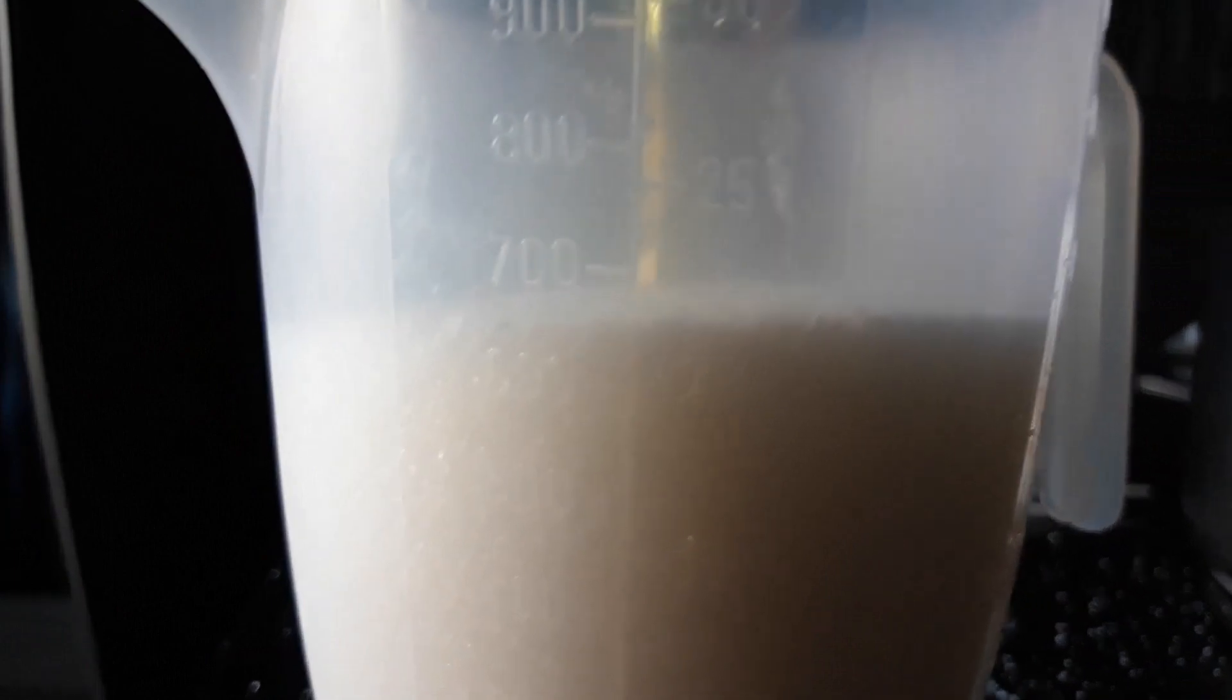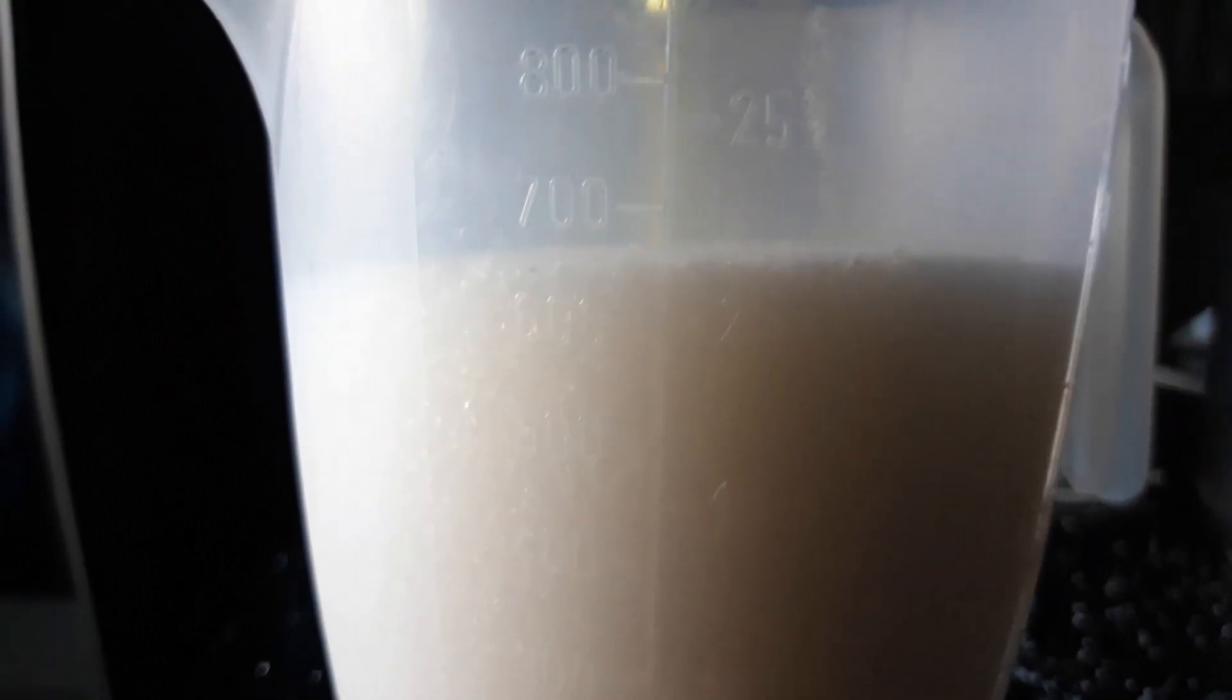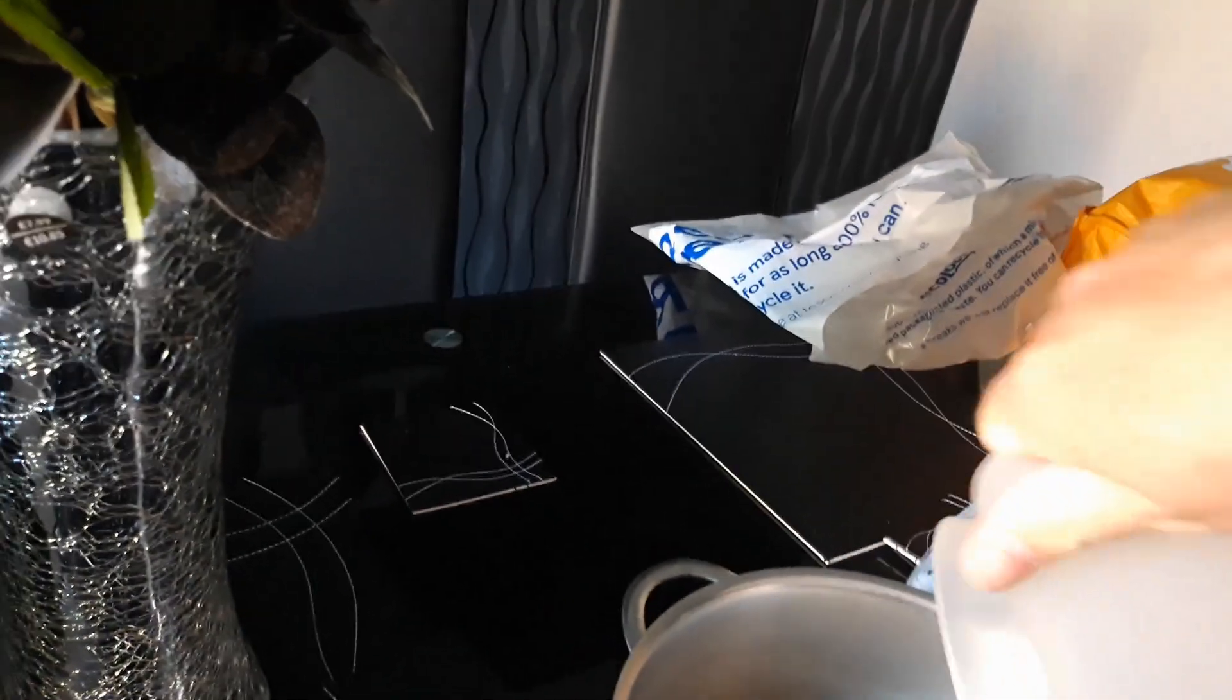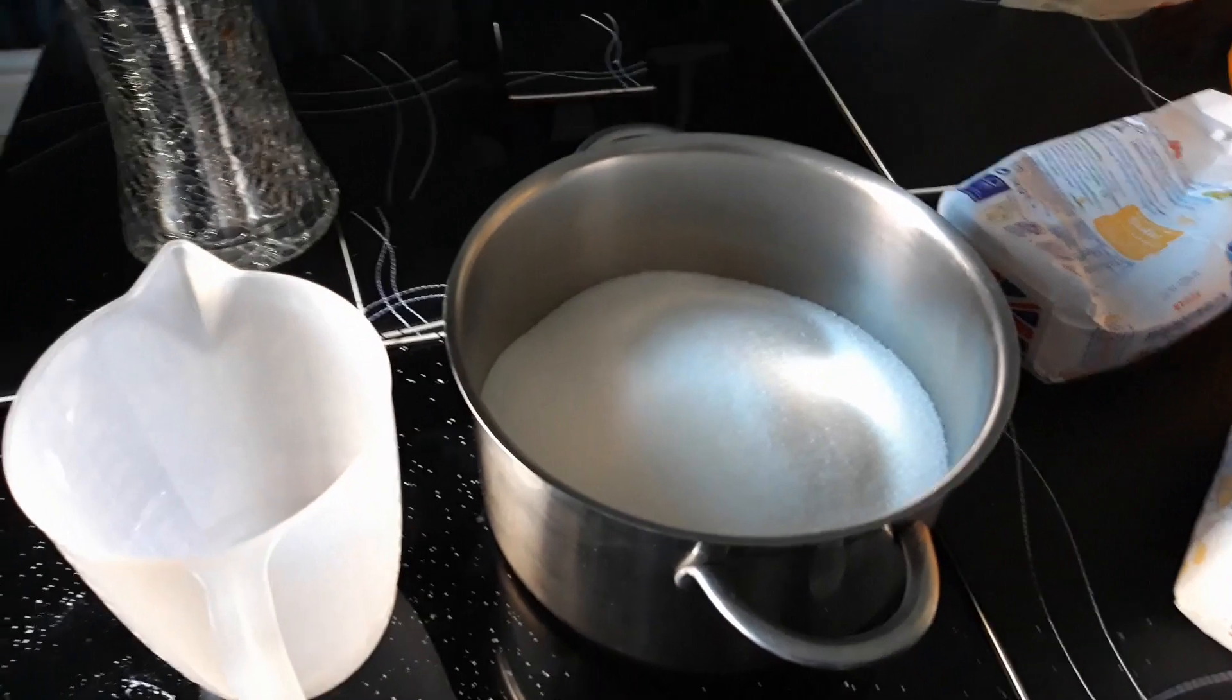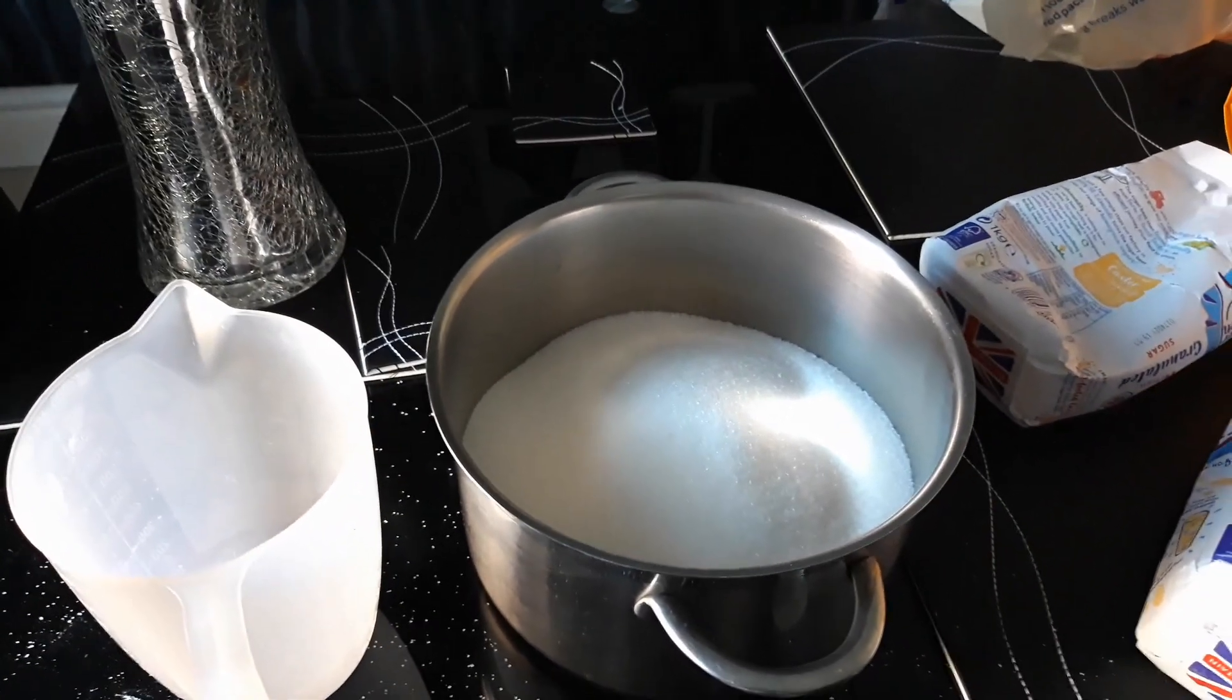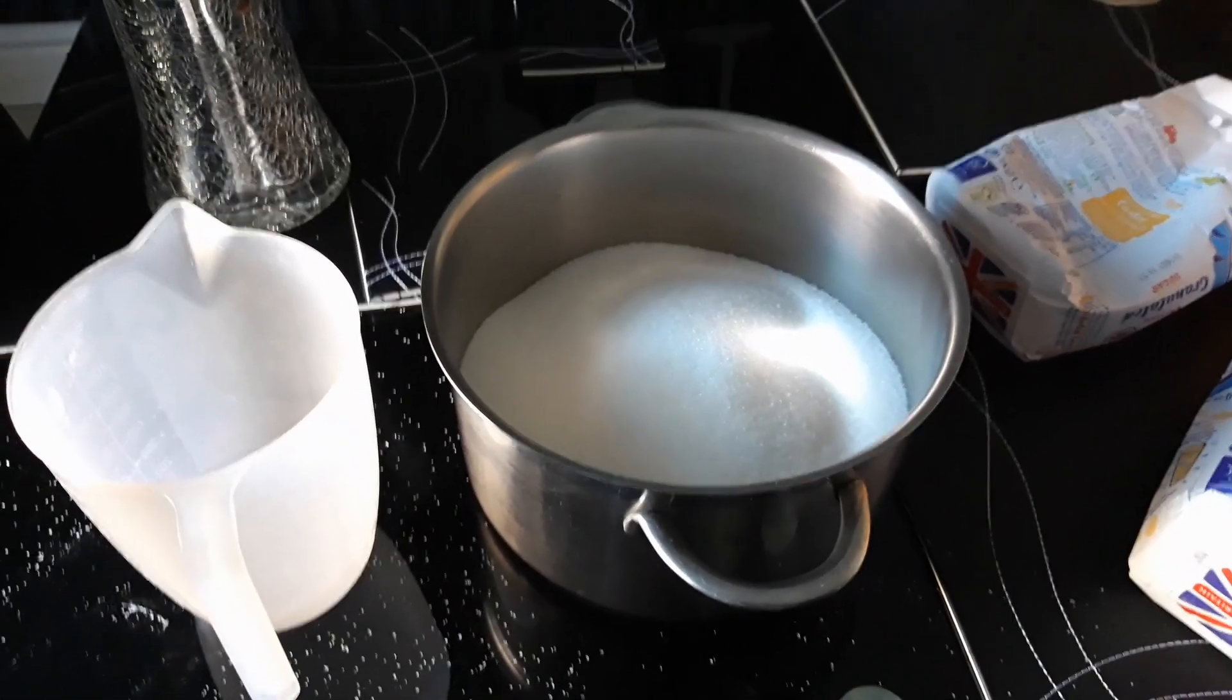And that's right, about 650 mils. There we go. So that's around about 1,450 mils of sugar. I'm going to put some boiling water in that now, let it all soak in, and then pop it into the tank.